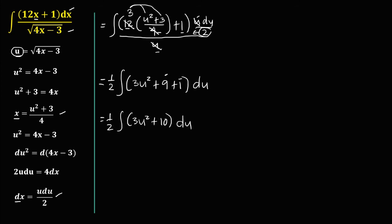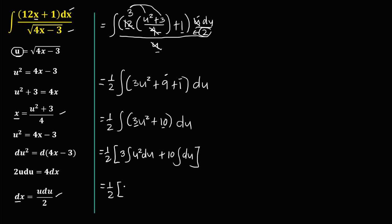Then we find the integral. Since the integral of u to the power n is equal to u to the n plus 1 over n plus 1, so therefore u to the power 2 becomes u to the power 3 over 3, plus 10. And the integral of du, since the integral of dx equals x, so the integral of du equals u.